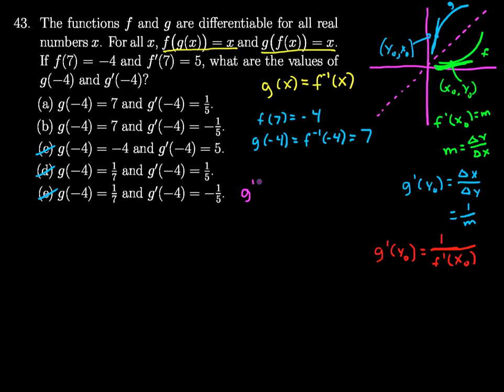g prime of negative 4 should equal 1 over - or sorry, g prime of negative 4 - 1 over f prime of 7, the corresponding point, and that's just going to be 1 fifth.